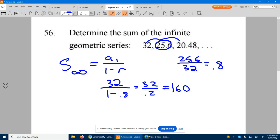Don't want to make you think it's negative—positive 160. So if we add up 32 plus 25.6 plus 20.48 plus the next guy plus the next guy, keep doing that, it's going to approach 160.